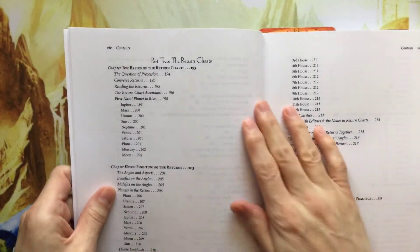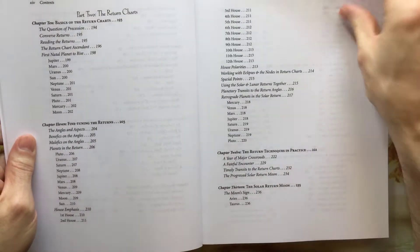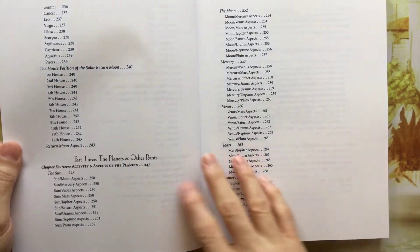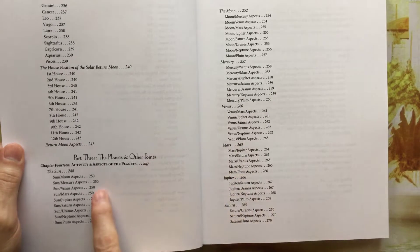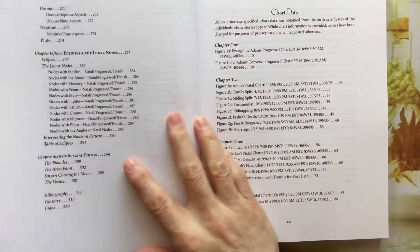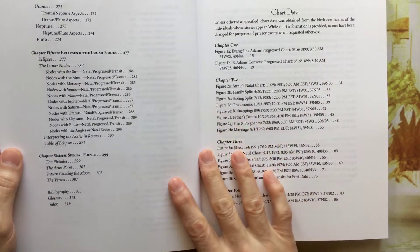Basics of return charts. Fine-tuning the returns. The return technique and practice and things like this. So a lot of interesting stuff. Part three, the planets and other points. So it'll talk about the sun-moon aspect, sun-mercury aspect, and things like that. So it does sort of flip around a lot.